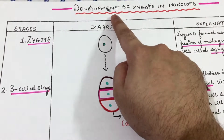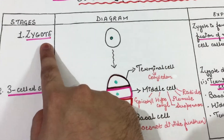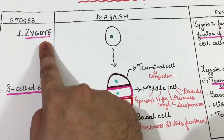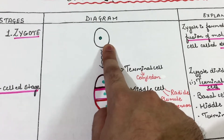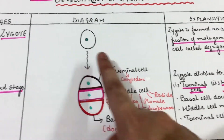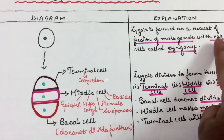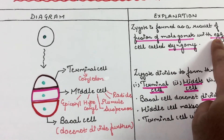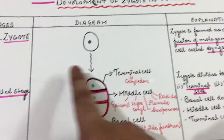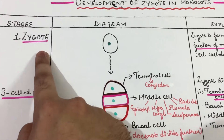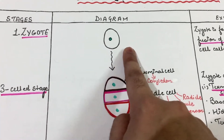Development of monocot embryo starts from the zygote stage. This zygote is formed by the fusion of male gamete with the egg and the process is called syngamy. In the first stage, or the zygote stage, the zygote is formed.